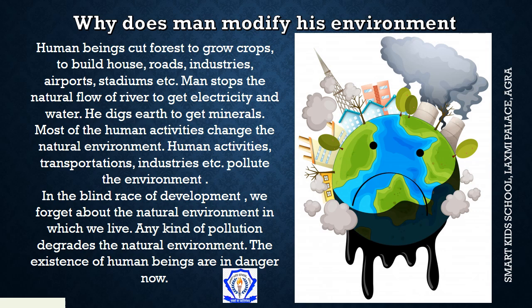Now we see why man modifies his environment. मनुष्य natural environment में हस्तक्षेप क्यों करता है? उत्तर बहुत सरल है — रहने के लिए, खाने के लिए, roads और industries बनाने के लिए वे जंगलों को काटता है, जिससे वे house, roads, industries, airports, stadium आदि बना सके। वह बड़ी-बड़ी नदियों को बाँध बना कर रोक लेता है जिससे electricity और पानी प्राप्त कर सके। मानव बेरहमी से धरती को खोद डालता है जिससे minerals प्राप्त कर सके। इन सब कार्यों से natural environment को बहुत नुकसान पहुँचता है, अतः मनुष्य को natural और human environment में balance बना कर चलना चाहिए।